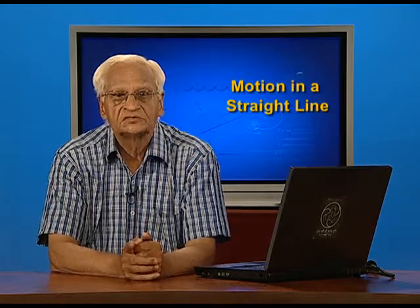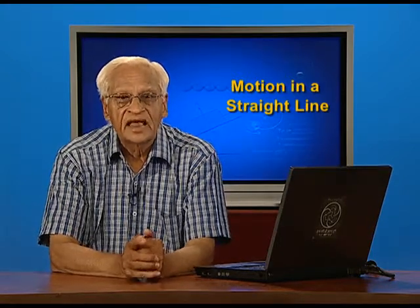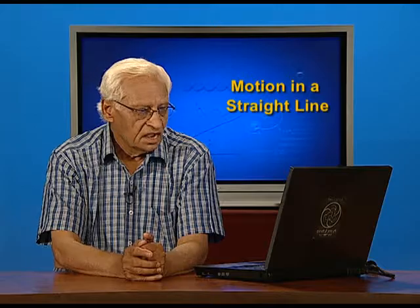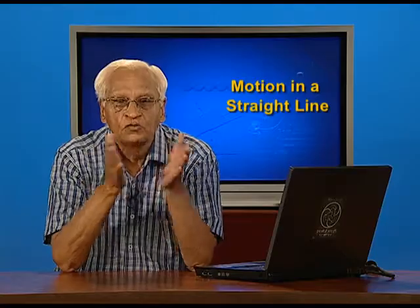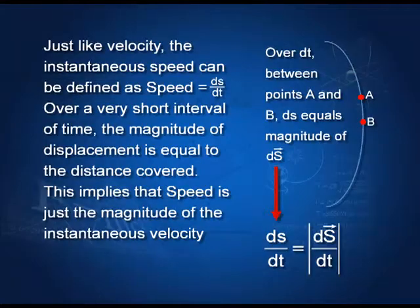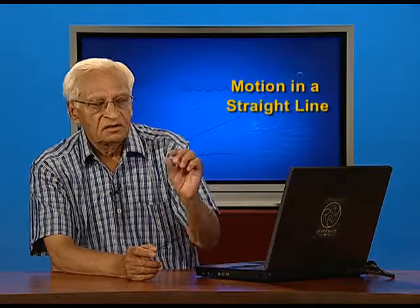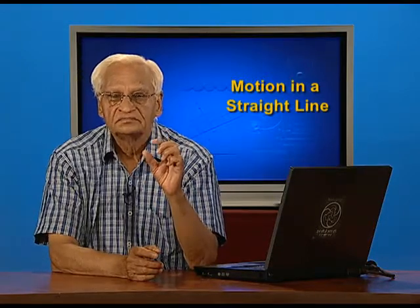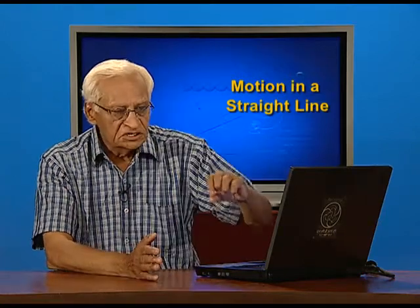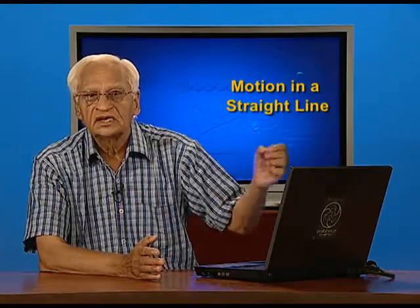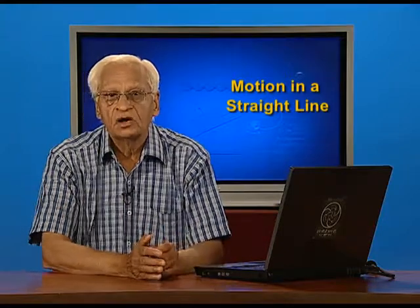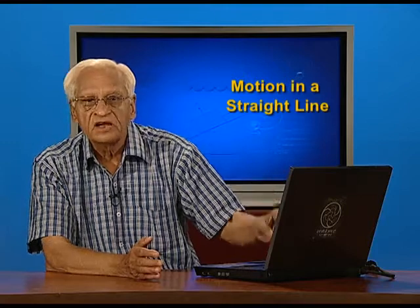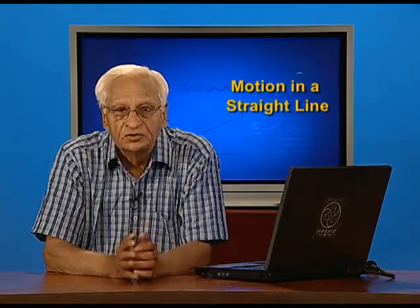Remember, small s is for distance and capital S with an arrow on it is the displacement. Now we have to establish a relationship between speed and velocity. We take a point moving on a curve and take two points which are very short distance away. In that short distance, the displacement would be equal to the distance covered. And therefore, the velocity magnitude would be equal to the speed.